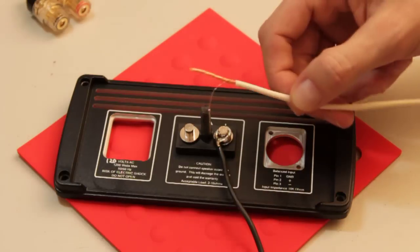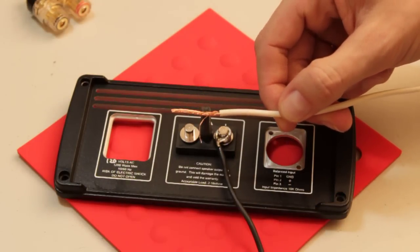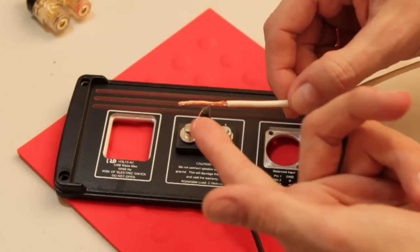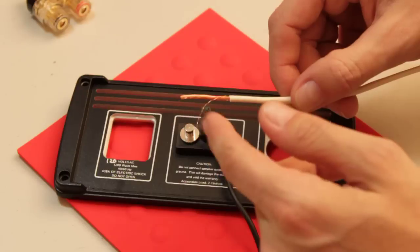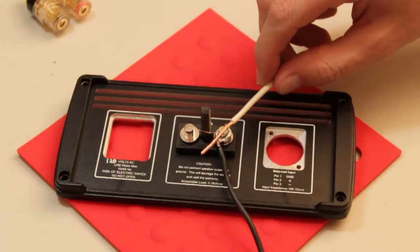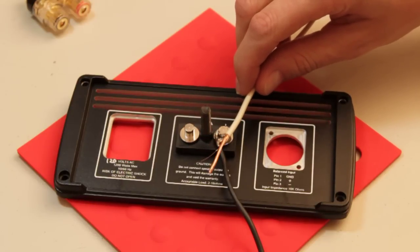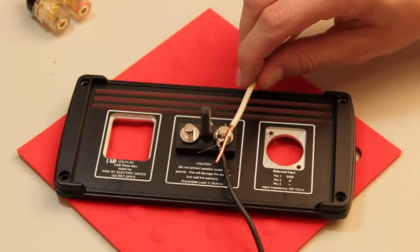However, if you've got stranded wire like this bare stranded copper wire here, you might end up with a stray piece that comes off. And if the light isn't very good, you might not notice it. If this happens to connect between the positive and negative posts or touches the chassis, you'll end up shorting the output stage, destroying it.